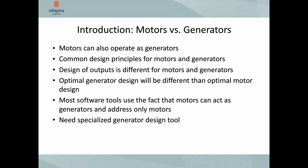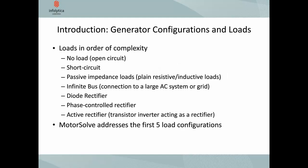What are some of the configurations and loads we see with generators? There are about six or seven different types. The simple ones are no-load or open circuit, used mostly for testing purposes, and short circuit — those two basic loads can characterize the generator. The third type is a passive impedance load, which can be purely resistive or a combination of resistive-inductive or resistive-capacitive loads.